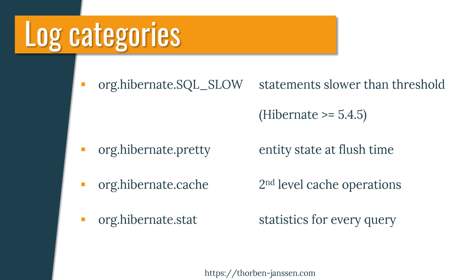Hibernate logs the state at flush time of a maximum of 20 entities to the org.hibernate.pretty category. And information about all second-level cache activities are written to the org.hibernate.cache category. If you activated Hibernate's statistics component on your development systems, you can find additional statistics for every executed query in the org.hibernate.stat category.